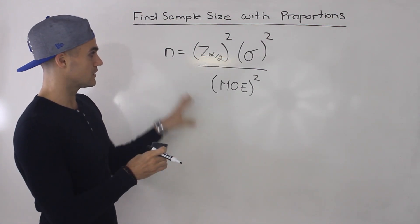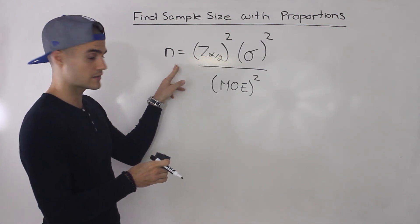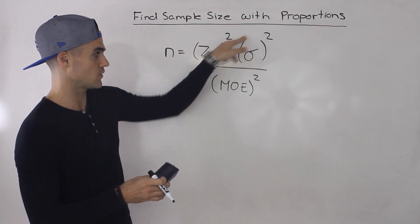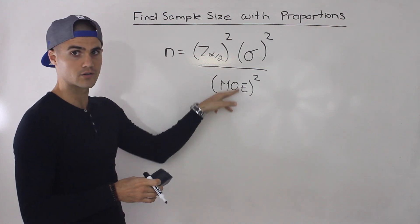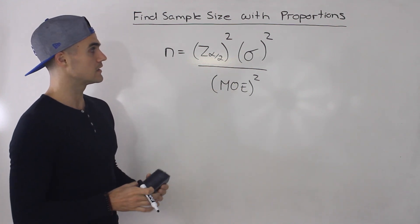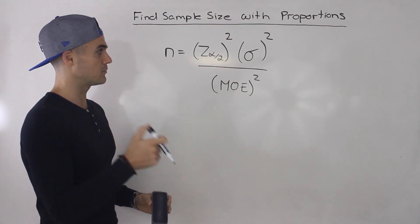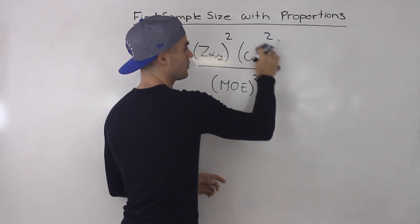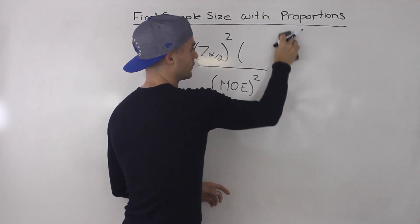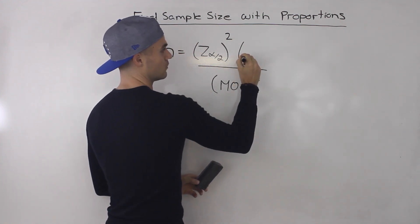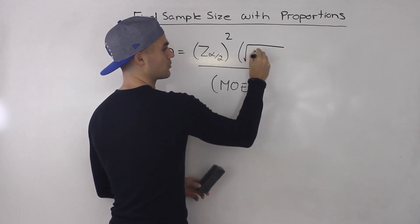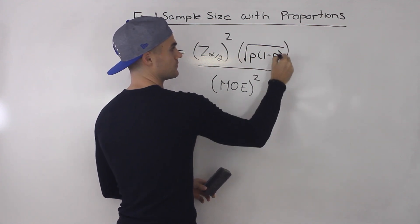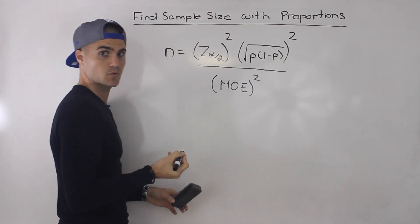With the sample mean, if you remember, this was the formula that we came up with. It was basically the z-score squared, population standard deviation squared, all over the margin of error squared. But in the previous video with proportions, remember population standard deviation we're not really dealing with anymore. What we're dealing with, what we input instead was the square root of the proportion times one minus the proportion. So that's going to be squared as well.